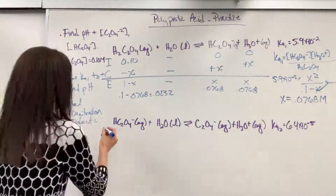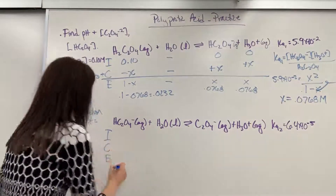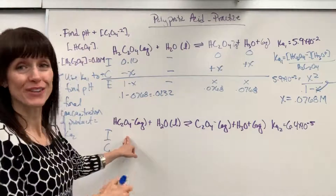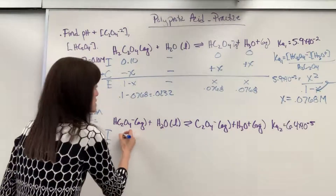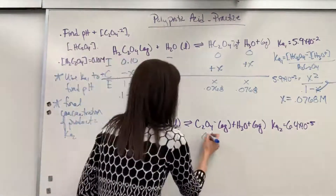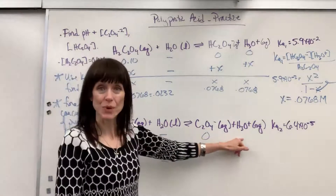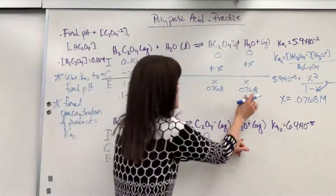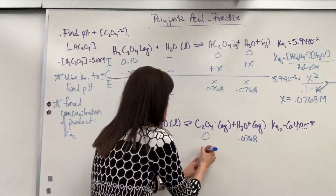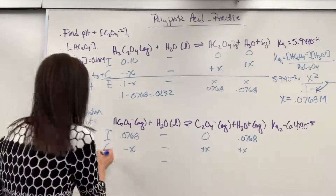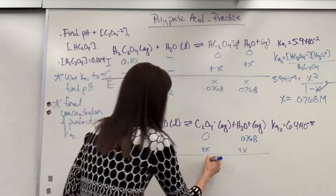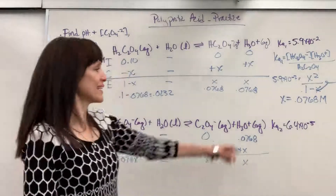For the second deprotonation, I-C-E. The initial concentration of hydrogen oxalate comes from the first reaction: 0.0768. Water is not counted. We have no oxalate ion initially. But we do have hydronium at 0.0768 from the first reaction. Change: we lose X of hydrogen oxalate and gain X of oxalate ion and X of hydronium. Equilibrium: 0.0768 minus X, X, and 0.0768 plus X.